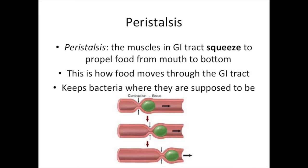One way the GI tract controls bacteria is called peristalsis. This fancy word, peristalsis, means that the muscles in your GI tract squeeze in a coordinated way to propel things from your mouth to your bottom. This peristalsis is how food moves through your GI tract.